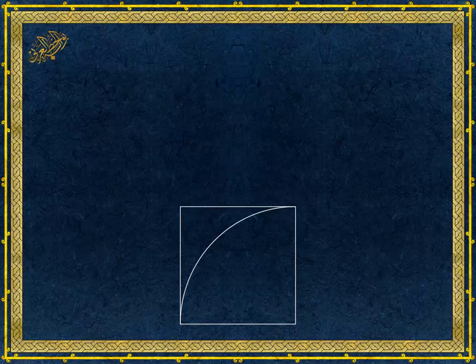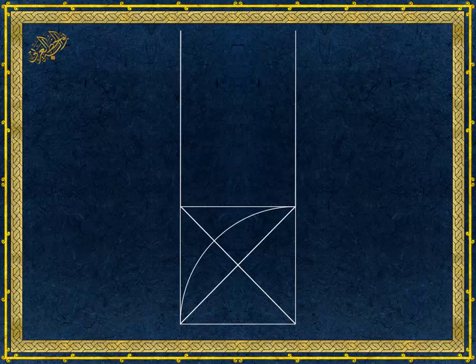The first thing we need to do is to draw lines connecting the opposite corners of the square. We also need to extend the two sides of the square in this manner.